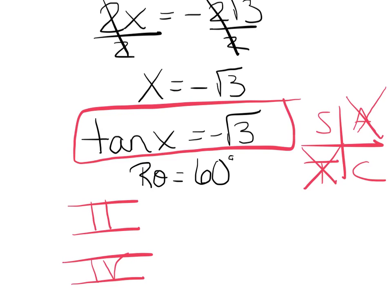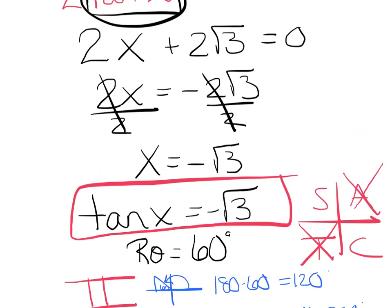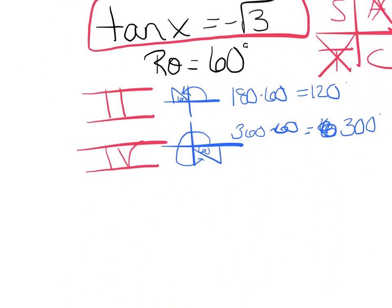All right, my reference angle's 60. I'm going to draw it in second quadrant. That's 60. That means my whole angle is 180 minus 60, or 120. And in quadrant 4, bow tie triangle, I've got my 60. That means my whole angle is 360 minus 60, which is 300. And how did we want those, in degrees or radians? Well, I didn't say. Let's convert them to radians.